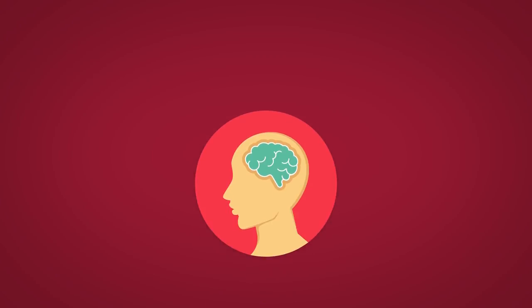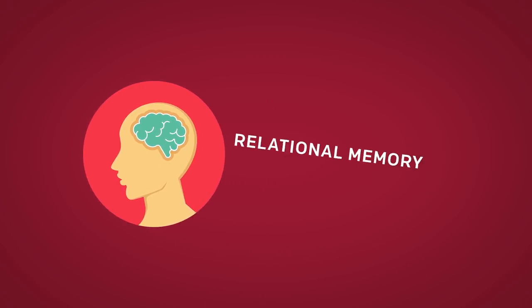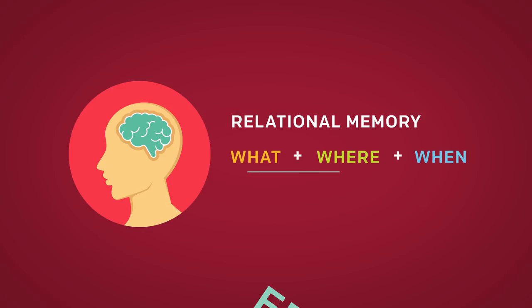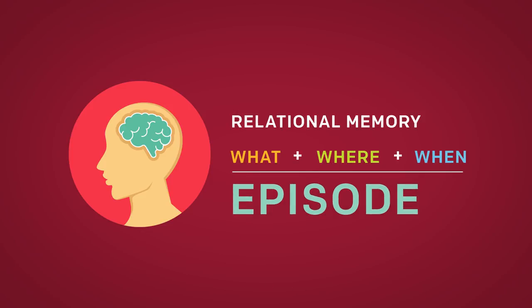Relational memory refers to the ability to bind different elements together — like what happened, where did it happen, when did it happen — and you have to bind this different information to form a cohesive episode.